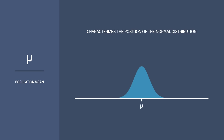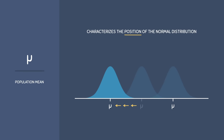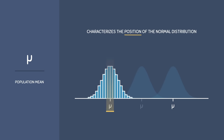The population mean mu characterizes the position of the normal distribution. If you increase the mean, the curve will follow and move towards the right, and if you decrease the mean, the curve will follow and move towards the left. This happens because the data will always cluster around the mean in normally distributed populations. As a result, the value of the mean determines the position of the normal distribution.